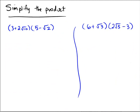Here we're performing a product of some radicals. We're going to use the classic distributive property — FOIL, as some people refer to it. First: 3 times 5 is 15. Outside: 3 times negative √2 is going to give us minus 3√2.